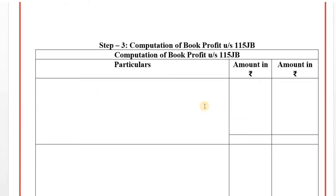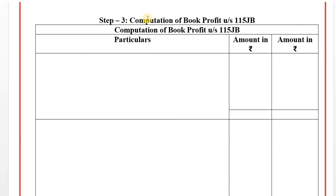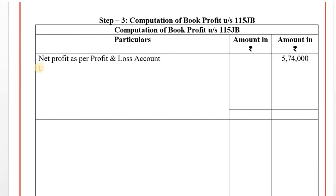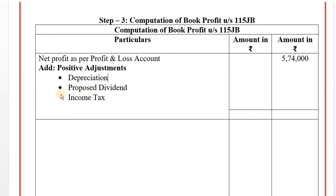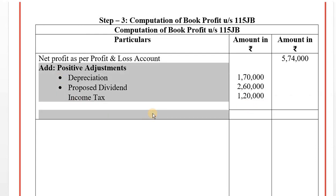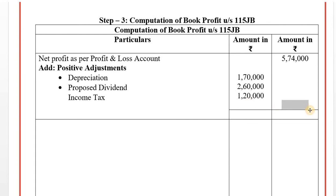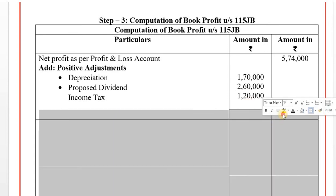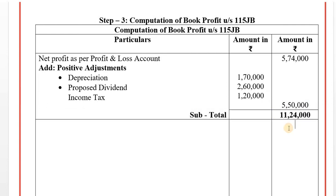Step 3: Computation of book profit under Section 115JB. Net profit as per profit and loss account: Rs. 5,74,000. Positive adjustments — add back: depreciation debited to profit and loss account Rs. 1,70,000, proposed dividend Rs. 2,60,000, income tax Rs. 1,20,000. Total positive adjustments: Rs. 5,50,000. Running total: Rs. 5,74,000 + Rs. 5,50,000 = Rs. 11,24,000.